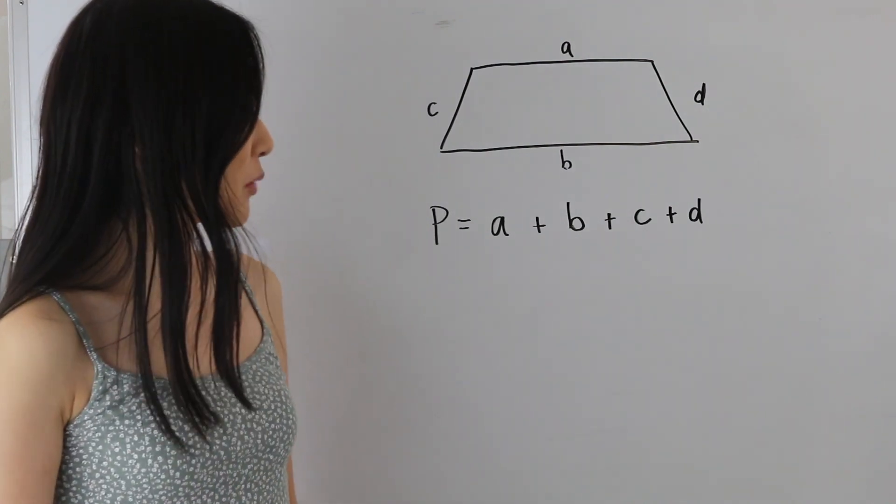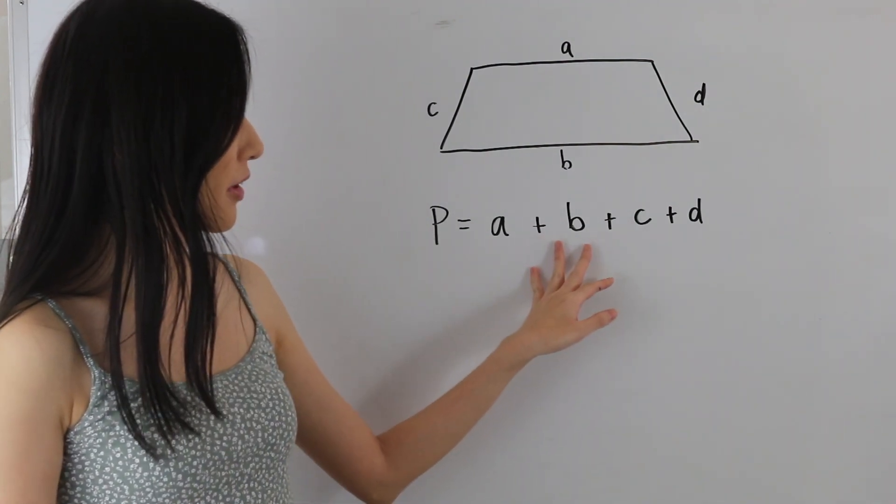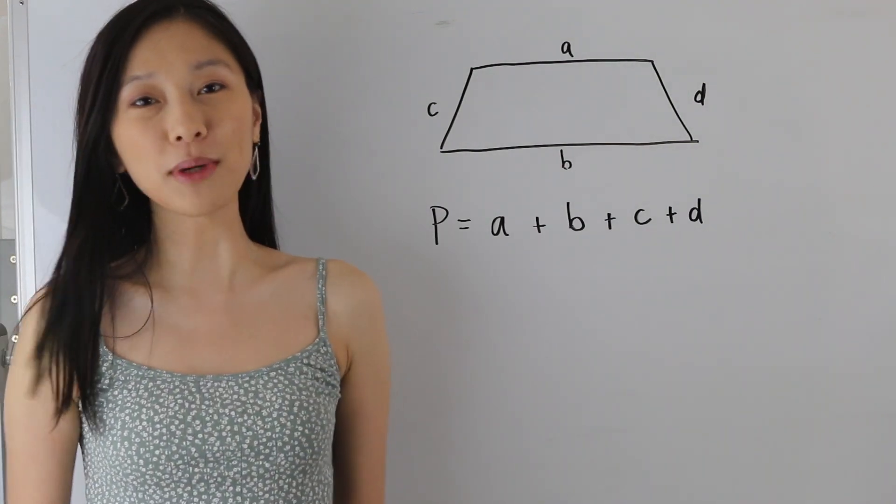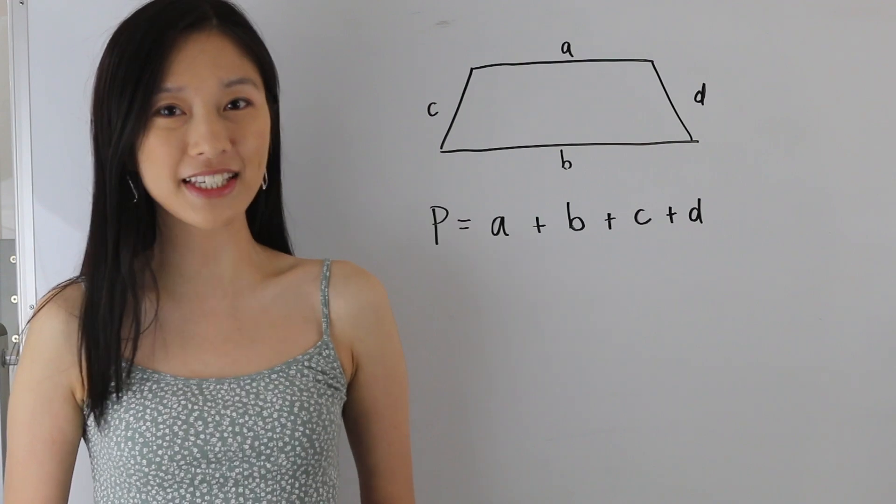So here we have a trapezoid and we are given the formula for the perimeter which is a plus b plus c plus d. So essentially all we need to do to find the perimeter of a trapezoid is add up all of its sides.